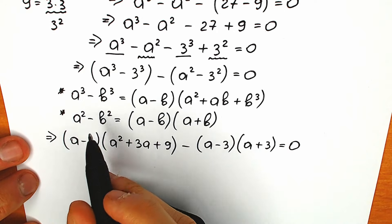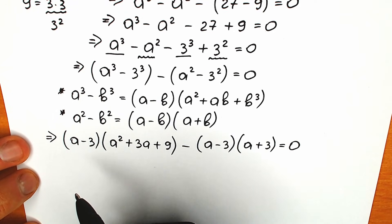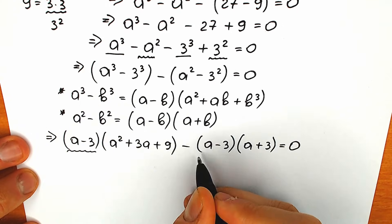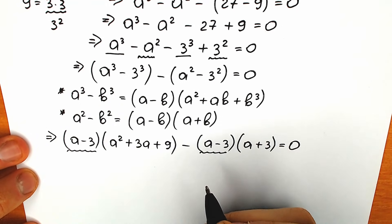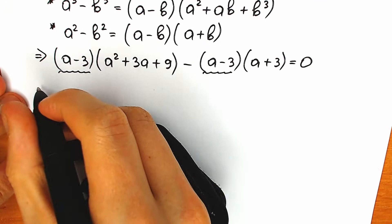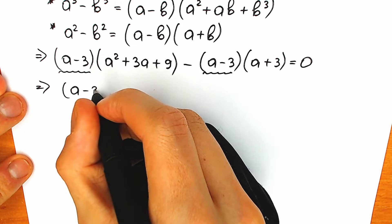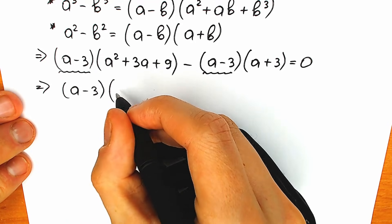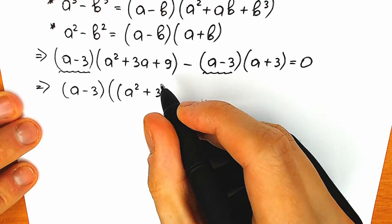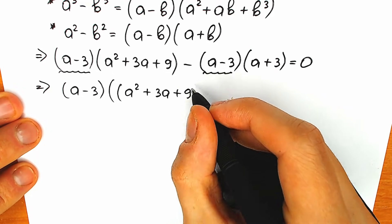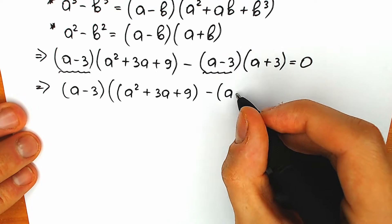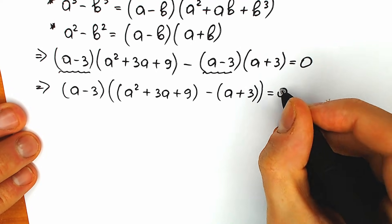Right now let's look at this from a different perspective. We have (a minus 3) and (a minus 3) — so we can easily factor out (a minus 3) as a common expression. So we have (a minus 3) in front, and in another parenthesis we have a² plus 3a plus 9 from the first part, minus (a plus 3) from the second part, equal to zero.